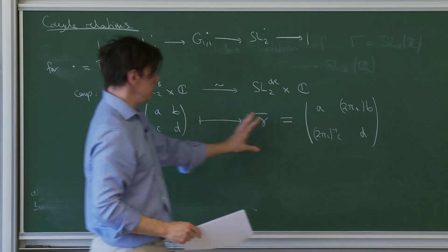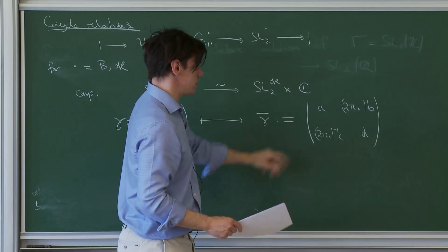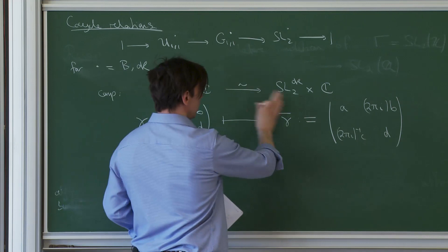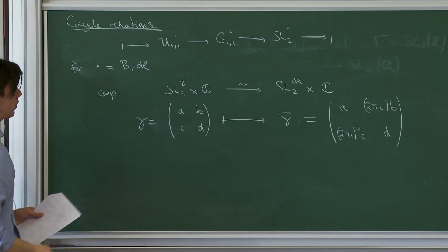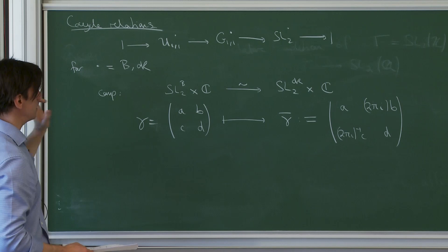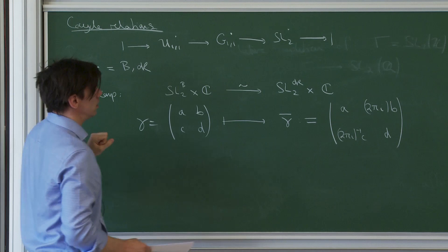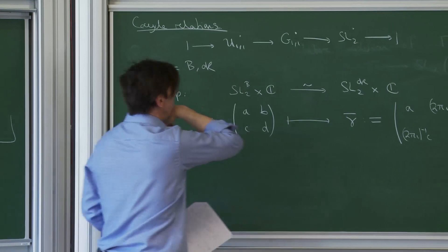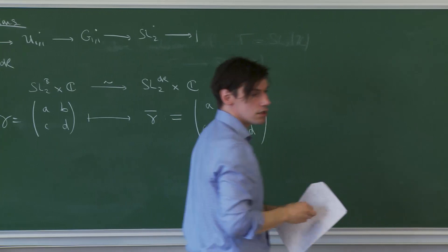This is a minor detail that can be ignored as a first approximation, but it's very irritating if you don't distinguish the Betti and de Rham copies of SL2. The reason for this will become clear when I talk about the underlying Hodge structure. Fundamentally, this SL2 acts on the H1 of the Tate elliptic curve, and that H1 is a copy of Q(0) and Q(-1), and that explains this 2πi sneaking in.